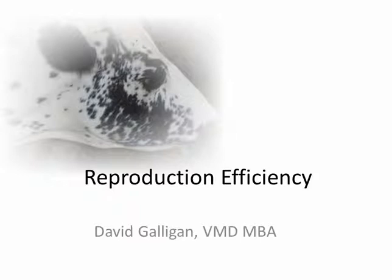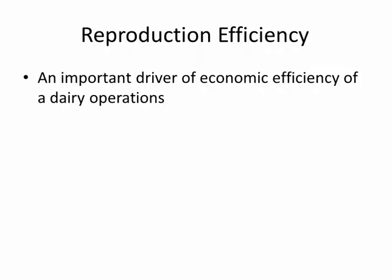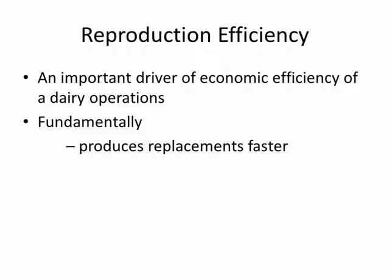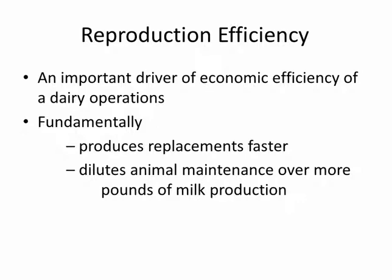Reproduction efficiency is an important driver of economic efficiency of dairy operations. It is important because, one, it fundamentally determines the rate of replacement animals available to the herd. High reproductive efficiency ensures that there will be more replacement opportunities for a dairy. It also, more subtly, dilutes animal maintenance over more pounds of milk production, and we will see this visually in several analytics that I'll present in a little bit.